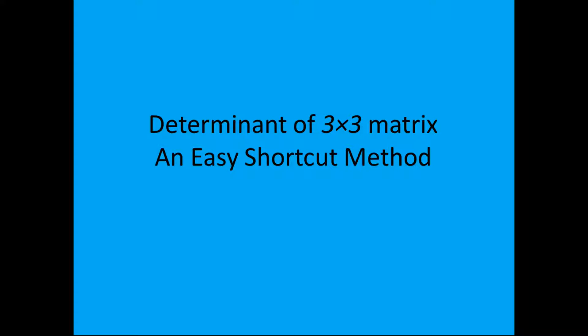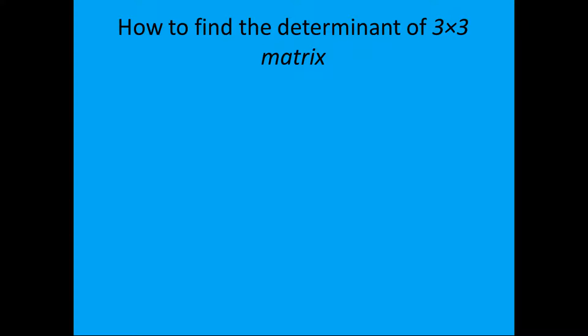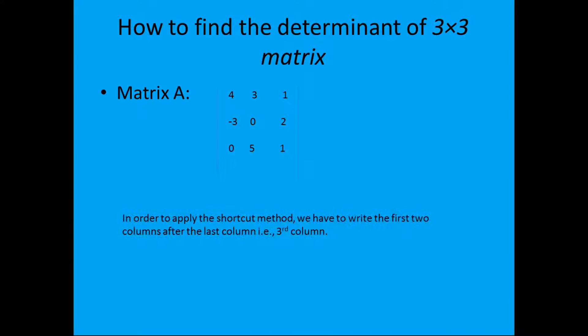Here we find the determinant of a 3x3 matrix through an easy shortcut method. This is matrix A, a 3 by 3 matrix with three rows and three columns.